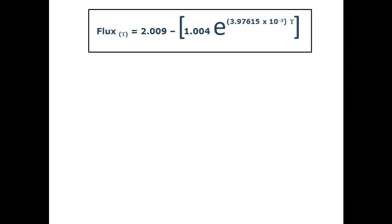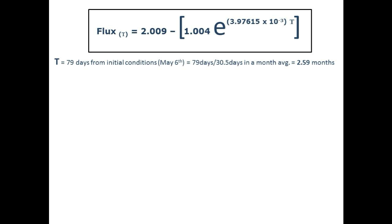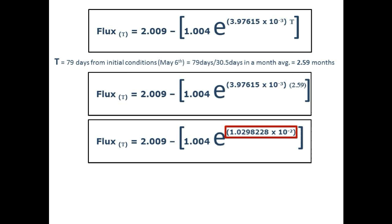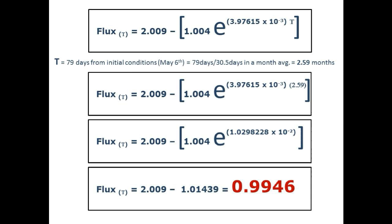Here is our equation for the long-term accelerating dimming curve. To calculate the current level of the long-term accelerating dimming, there are 79 days since our initial condition of May 6th, which converts to 2.59 months. Substituting this number in for the variable t and multiplying, we get the current level of the long-term accelerating dimming at 0.9946 below the normalized nominal flux level of the graph.